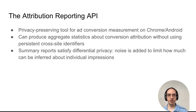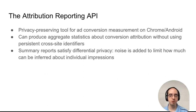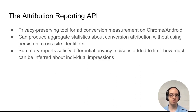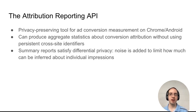The Attribution Reporting API is a privacy-preserving tool for ad conversion measurement on the Chrome and Android platforms. The traditional approach for ad conversion measurement uses third-party cookies, but due to user privacy concerns, a number of browsers are deprecating the use of third-party cookies. The Attribution Reporting API can produce aggregate statistics about conversion attribution without using persistent cross-site identifiers.